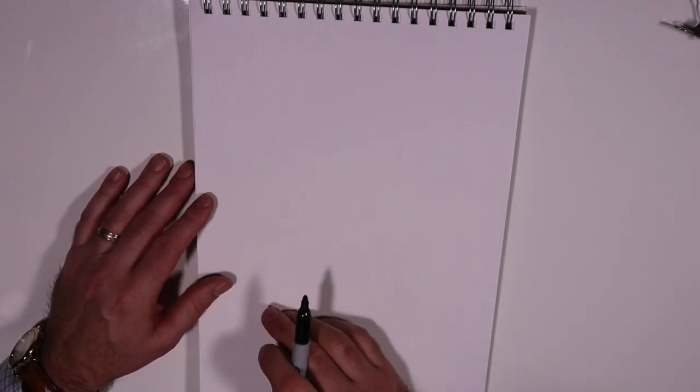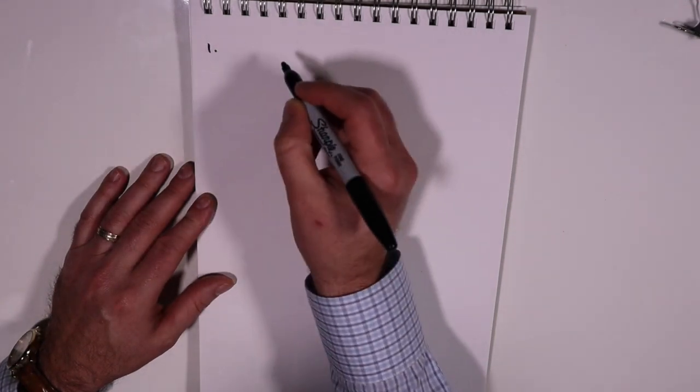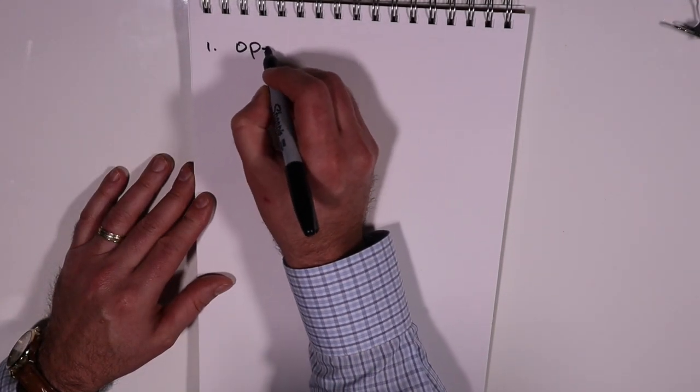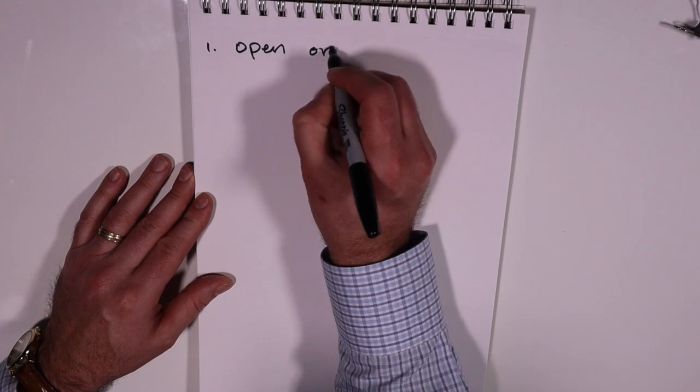So that's the first thing that you want to do when you're describing a fracture. Number one is you want to note whether it's open or closed.